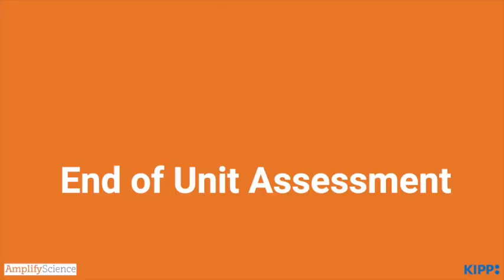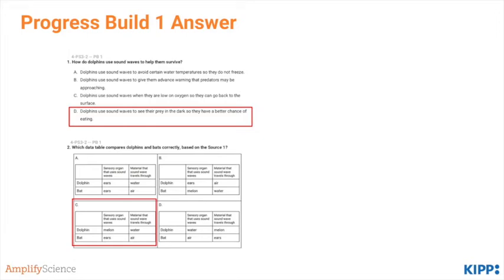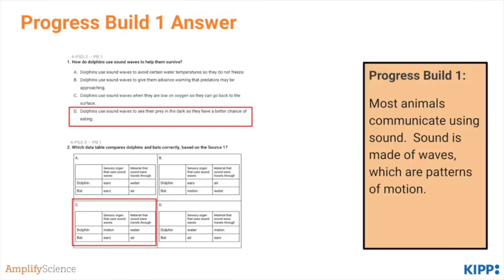On to the end of unit assessment. The first question assesses progress build one. Go ahead and complete it and then check back here for answers. You should have gotten D for number one and C for number two. Once again, this assesses progress build one.